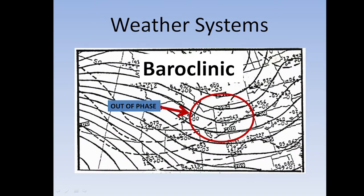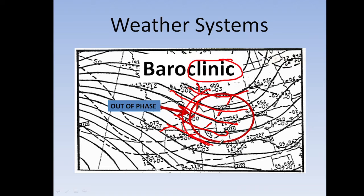When we talk about baroclinic being out of phase, the dashed lines — which are the isotherms — are perpendicular to the solid black lines, which are the isobars, so they are out of phase. If you think about 'clinic' as being sick, this is out of phase — that's one way to remember it's a baroclinic system.